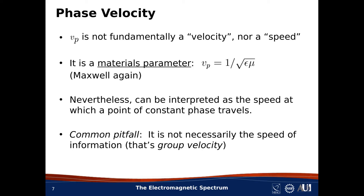I said you should think of phase velocity as a materials parameter, but I know you are thinking that it also has to correspond to the speed of something, and you're right. In fact, phase velocity can be interpreted as the speed at which a point of constant phase travels, and in this sense it can, if you're careful, be interpreted as the speed of a wave. But there's a gigantic pitfall: the speed of a wave is not necessarily the same as the speed of information conveyed by the wave. The speed of information is a different quantity, and we call that group velocity. This is an important distinction because there are cases in which the phase velocity can be greater than the speed of light. However, the group velocity — that is, the speed of information — is never greater than the speed of light. So just remember: phase velocity is fundamentally a materials parameter, not a speed.